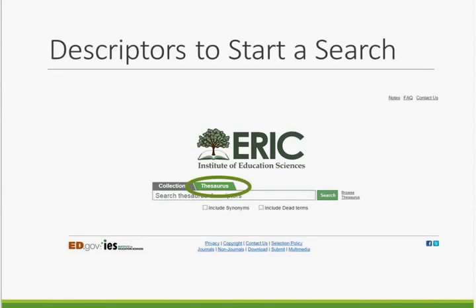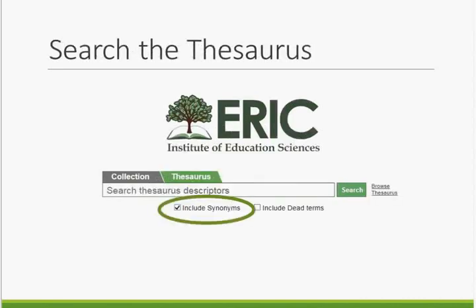You can also use a descriptor to start a search. To do this, you will first need to find a descriptor to use. You can easily access the ERIC thesaurus on the ERIC website — simply click on the tab on the ERIC homepage as circled, and from here you can either search or browse the thesaurus. To search the thesaurus, enter your search criteria in the box and click the search button. To include synonyms in your thesaurus search, click on the 'Include Synonyms' checkbox just below the search box. As Lydia discussed earlier, synonyms serve as guides to descriptors, so it may be useful to include them in your search.